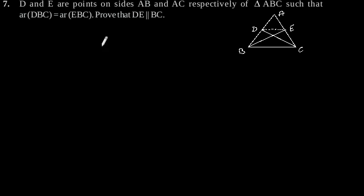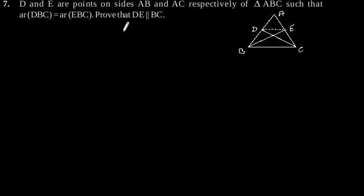Exercise 9.3, Question number 7. D and E are points on sides AB and AC respectively of triangle ABC, such that area of triangle DBC is equal to area of triangle EBC. Prove that DE is parallel to BC.